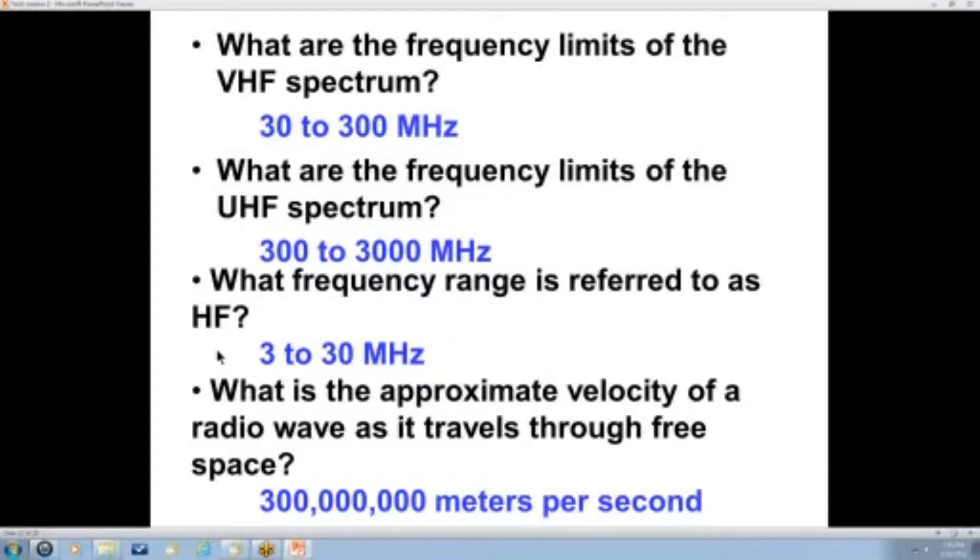What is the approximate velocity of a radio wave as it travels through free space? We already said it's the speed of light. That is 300 million meters per second. This is where our magic number of 300 comes from for figuring out the wavelength in meters. We have million meters per second here. We have megahertz, which are millions of cycles per second. So we can just get rid of these other zeros, divide the number of megahertz into the 300, and we get the wavelength.